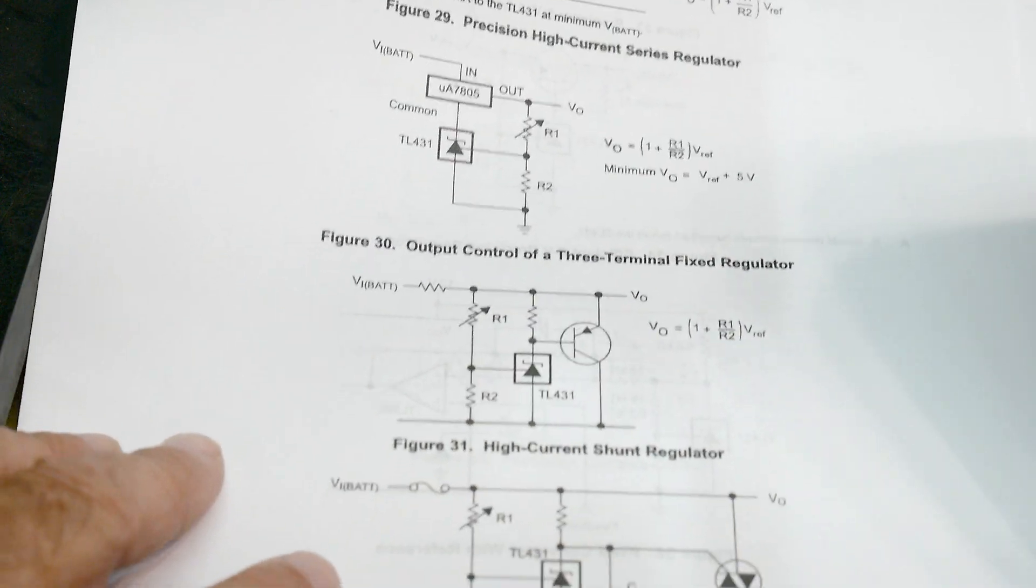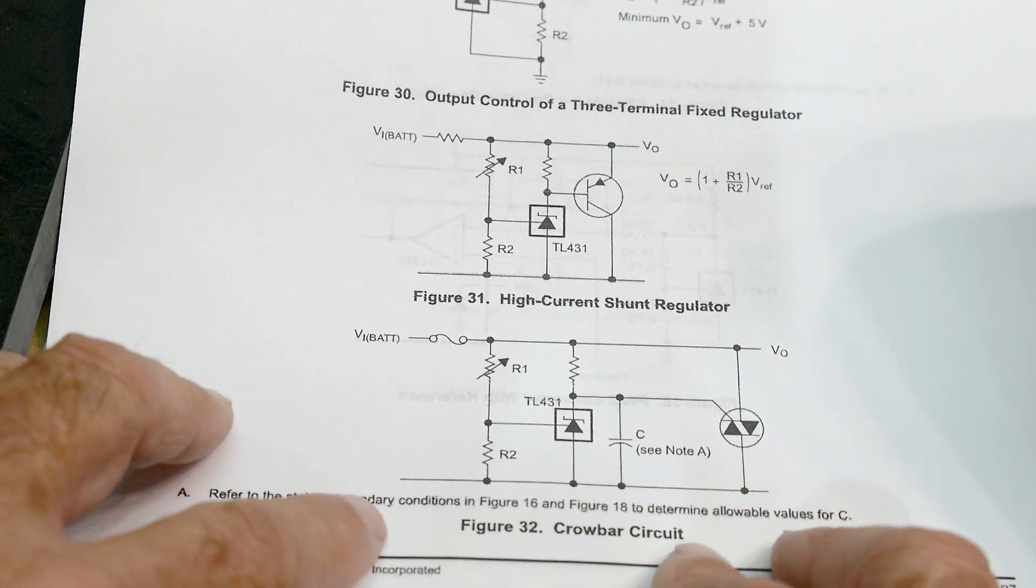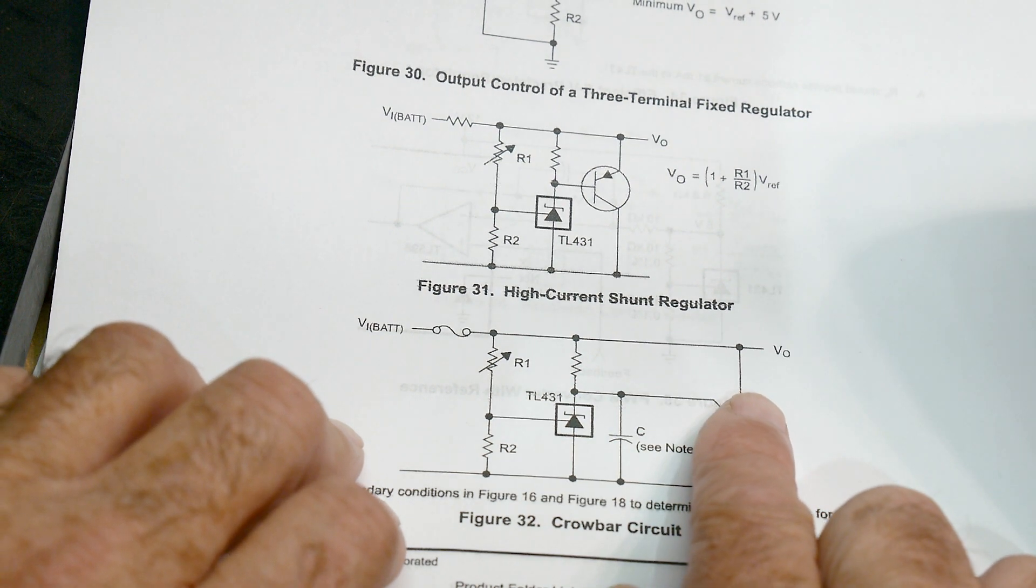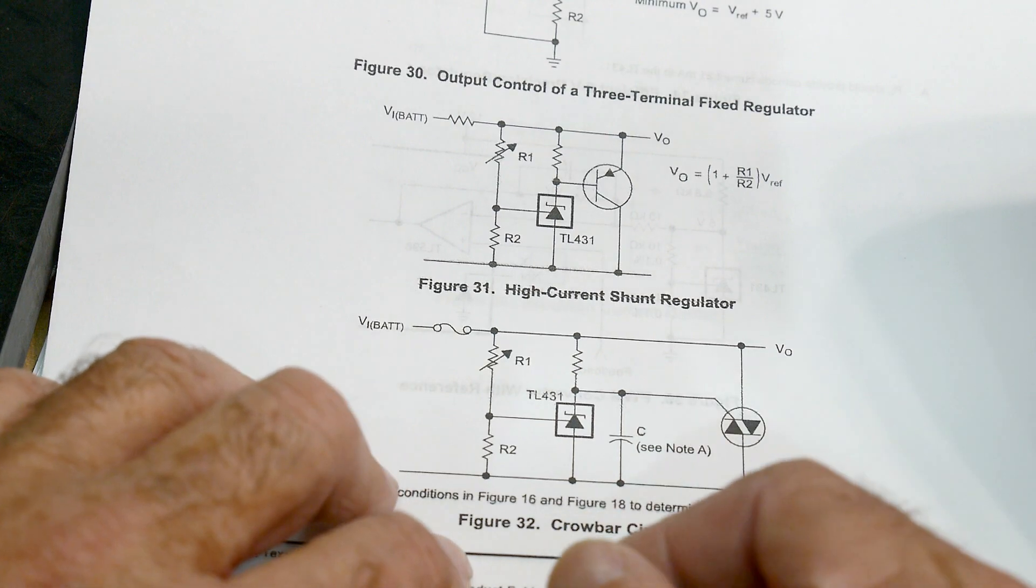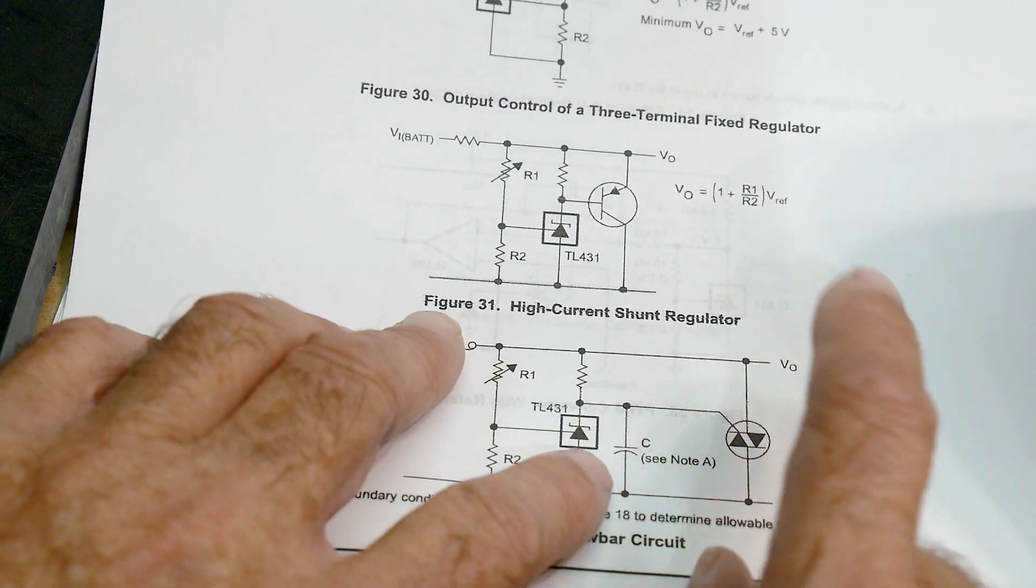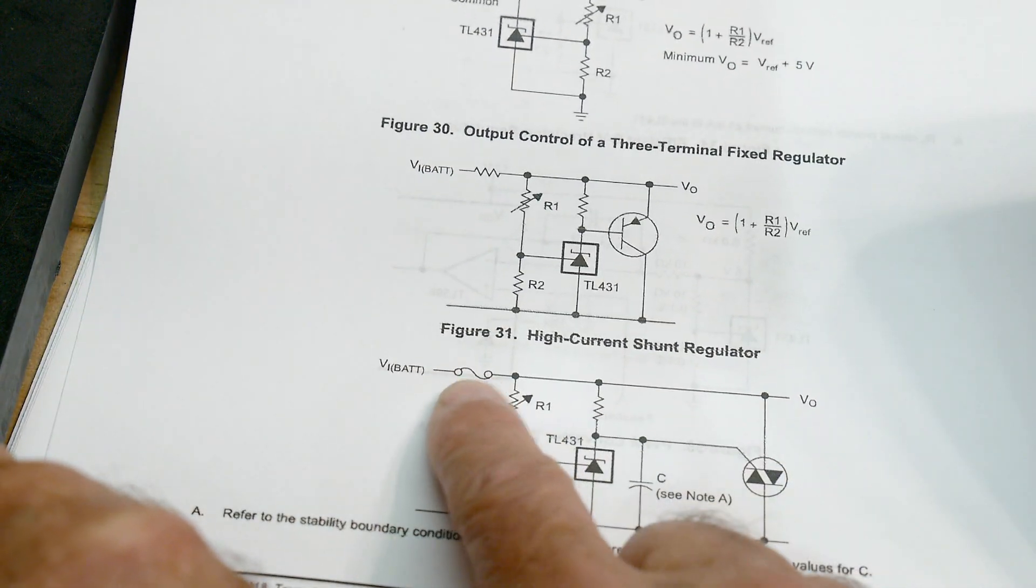And somebody asked for a circuit like this one, one person wanted to know about crowbar circuits. What is a crowbar circuit? A crowbar circuit is a circuit that basically shorts out the power supply if the voltage goes too high. And why would you want to do that? Seems kind of silly. You'd blow things up.